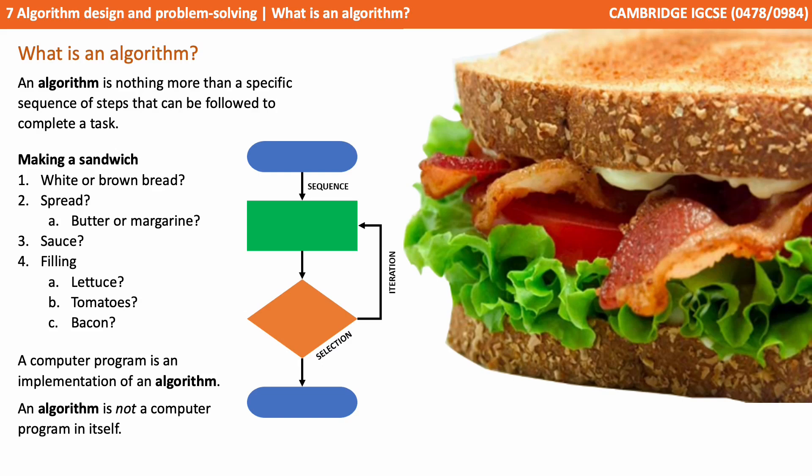We execute algorithms all the time in our everyday life. For example, here's a very simplified algorithm for making a sandwich. We choose our bread, white, brown, maybe seeded or toasted. Do we want spread? If so, what type? Do we want sauce? What's our filling?